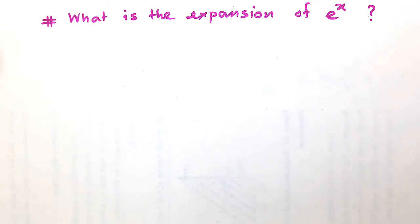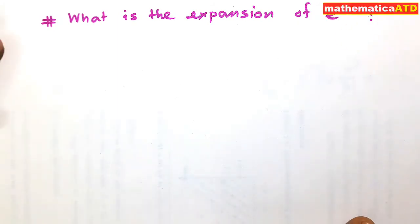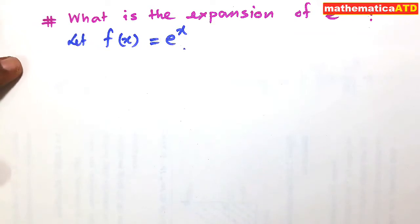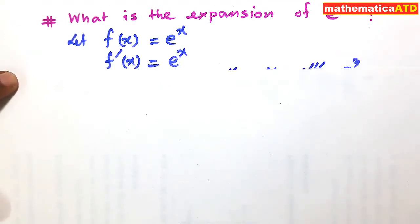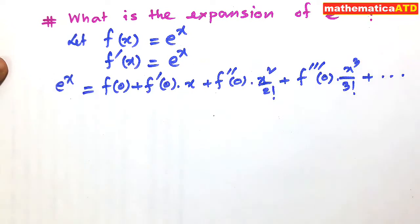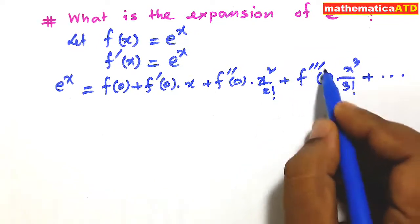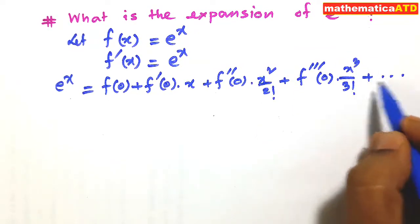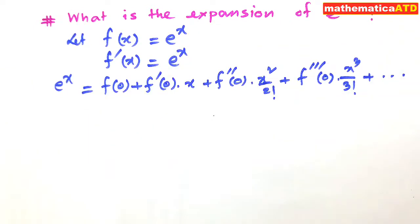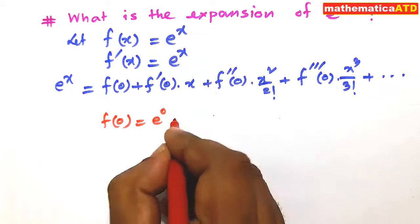The expansion of e to the power x. For finding the expansion of e to the power x, we shall use the Maclaurin's Infinite Series. Let us consider that f(x) is equal to e to the power x. So f'(x) is equal to e to the power x again. The expansion is: e to the power x equals f(0) plus f'(0) into x plus f''(0) into x² by 2 factorial plus f'''(0) into x³ by 3 factorial plus so on. f(x) is equal to e to the power x, so f(0) is equal to e to the power 0, that is equal to 1.